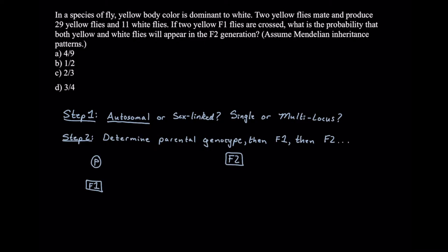The next thing we need to determine in step one is if this is a single or multi-locus genetic problem. Locus in genetics refers to the place on a chromosome where a gene is located. Single locus problems look at a singular gene; multi-locus problems look at multiple genes. In this case, we're looking at one single gene coding for body color, so we have an autosomal genetic trait encoded by a gene on a single locus.